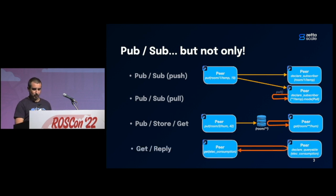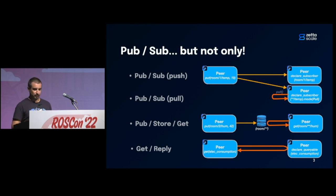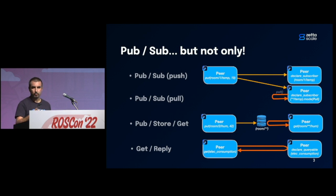Since we also implement query operations, we also implement the way for you to declare your own queryable. It means that with Xeno, you can implement your own RPC — Remote Procedure Call mechanism — based on Xeno. On the query side, you perform a get operation. This get operation will go to the callback of your queryable, and in there you can decide to reply with one or several values to your querying application.